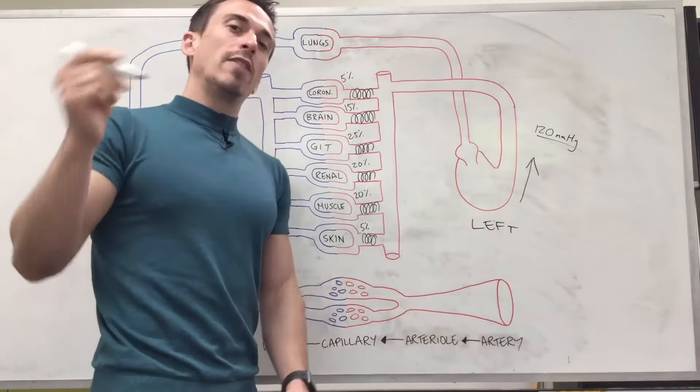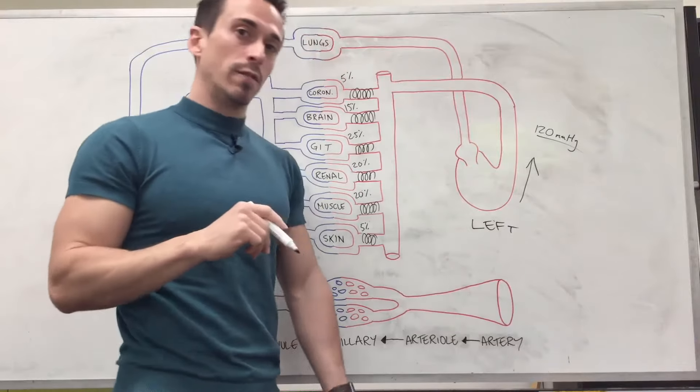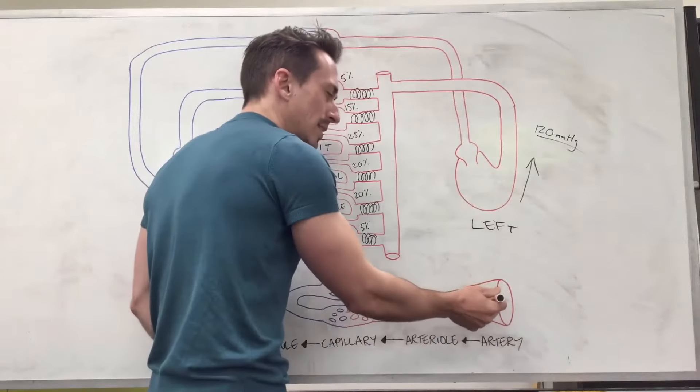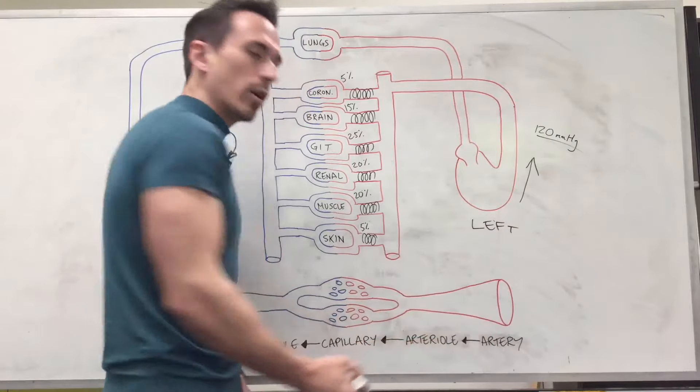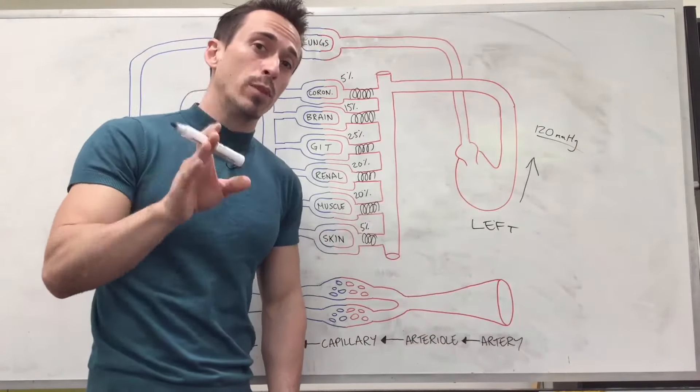So arterioles have lots of smooth muscle and this makes them resistance vessels. I said arteries have elastic tissue, they're compliant. You've got arterioles have smooth muscle and they are resistance vessels, they can play around with blood pressure.